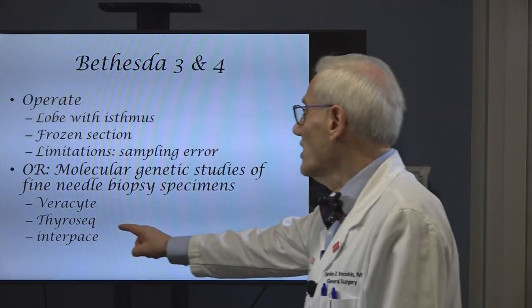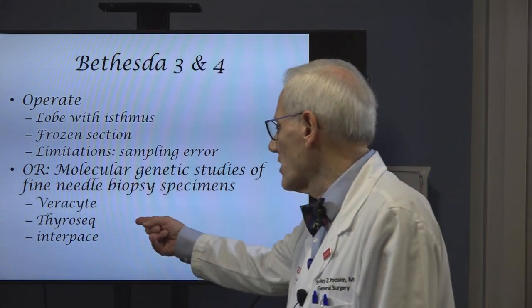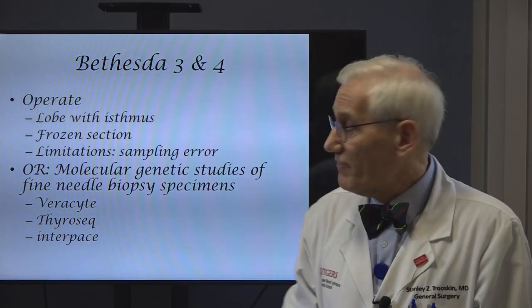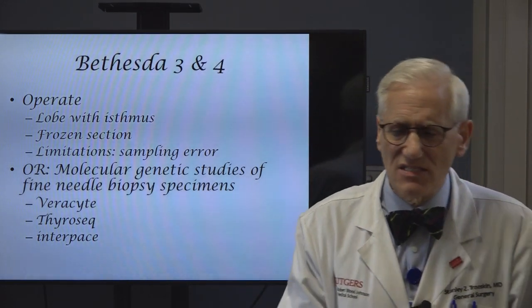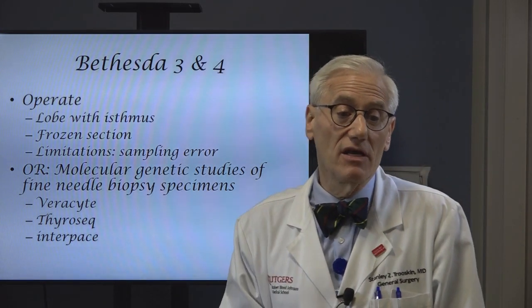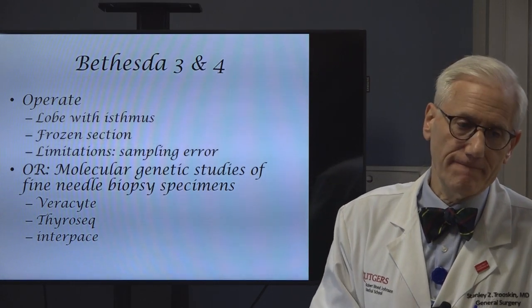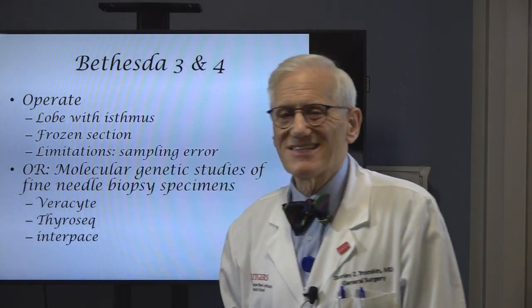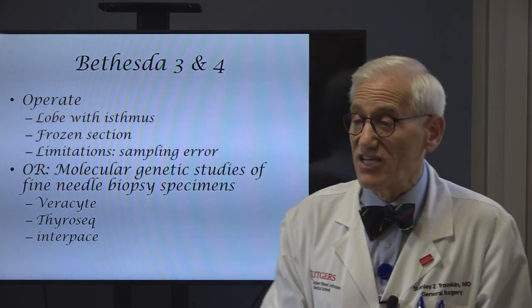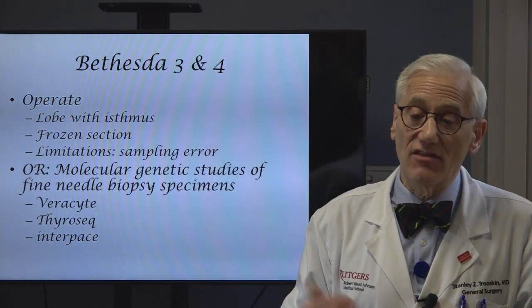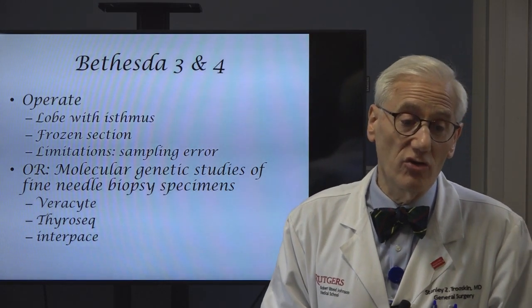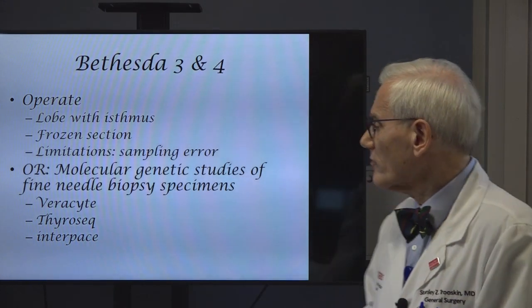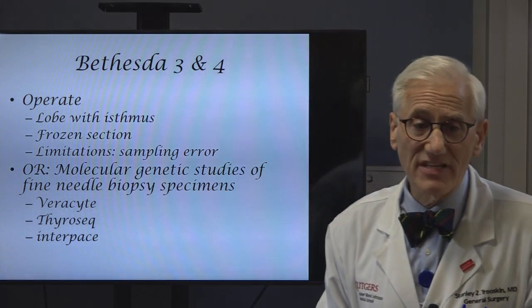ThyroSeq will give you a different answer — it was developed at the University of Pittsburgh. They'll tell you exactly what genes they see. For example, they may say 'We see KRAS, we see NRAS — the risk of cancer is 65.37 percent.' None of these assays tell you it's zero or 100 percent, but once you get above a certain number, it's going to force you to operate. Interpace does it a little differently — they take the exact slide that the pathologist looked at, split it open, scrape the cells off, and do an assay giving you a percentage. The advantage is they're doing the assay on the same material the pathologist looked at. The disadvantage is no one's ever looking at that slide again, though they will take a picture of it.